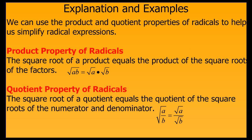We can use the product and quotient properties of radicals to help us simplify radical expressions. The product property of radicals states that the square root of a product equals the product of the square roots of the factors. In other words, the square root of the quantity a times b is equal to the square root of a times the square root of b.